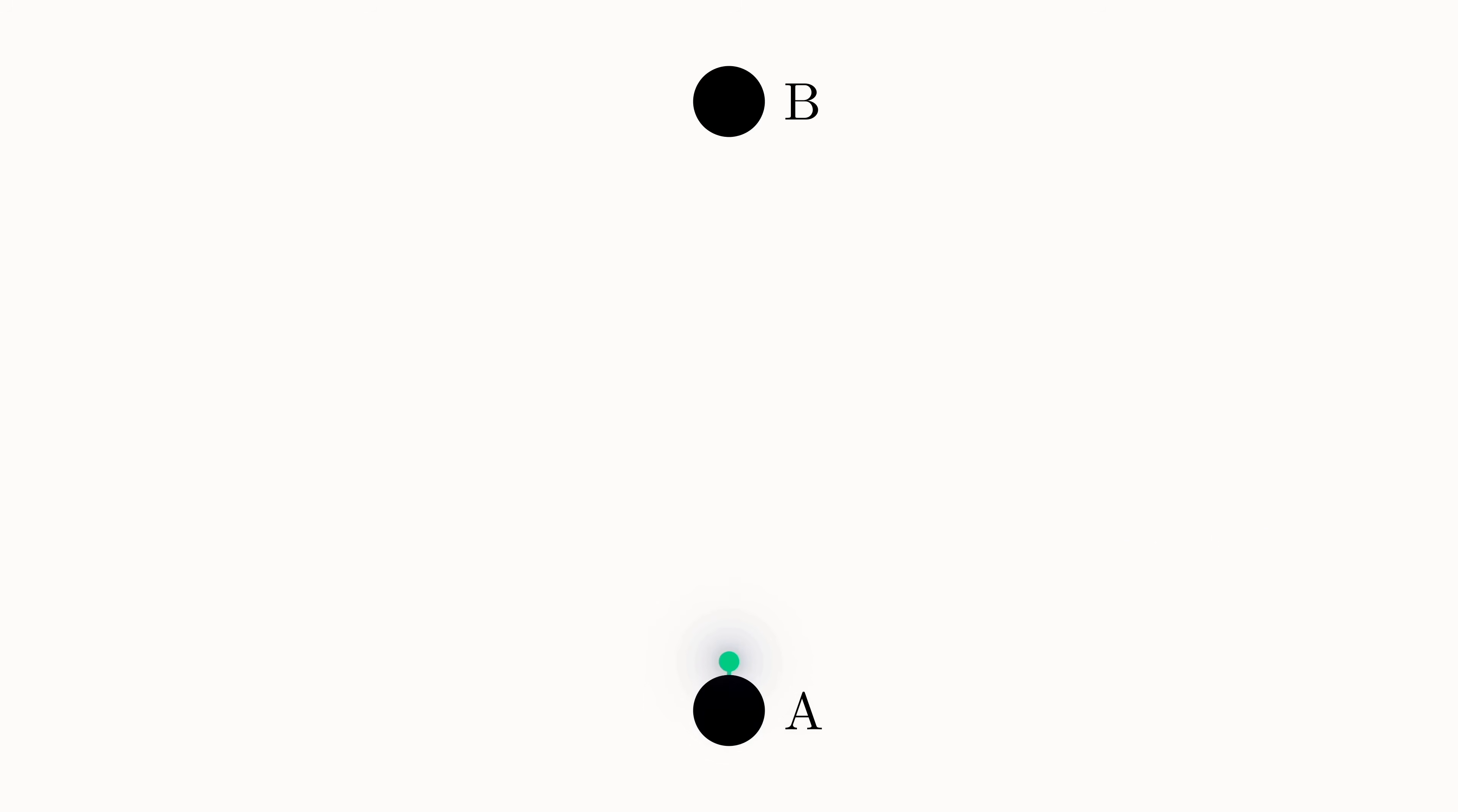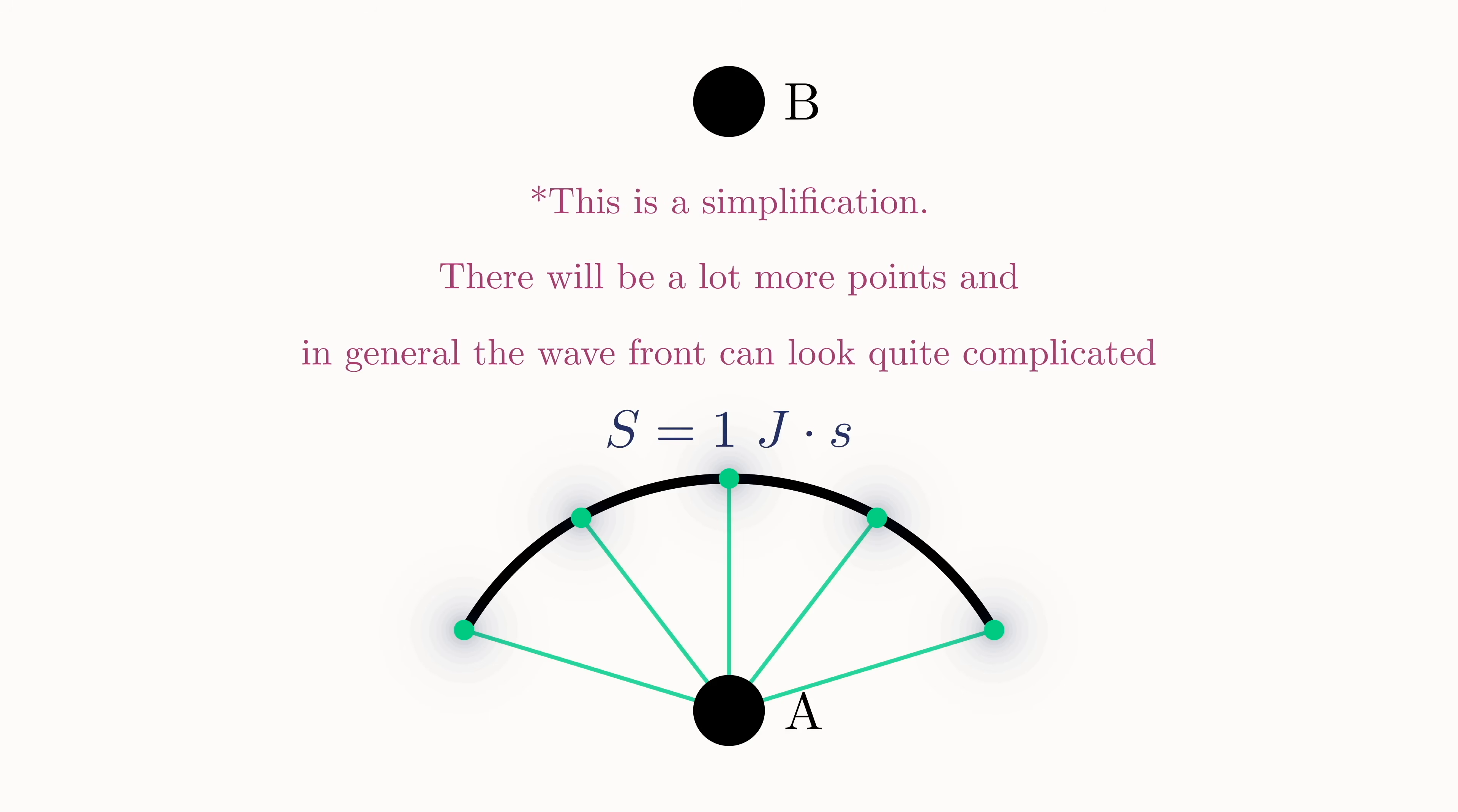So if the particle's motion to this point coincides with one unit of action, there will also be a whole range of points that the particle could have moved to that would have resulted in the same amount of action. And of course, we can repeat this process.